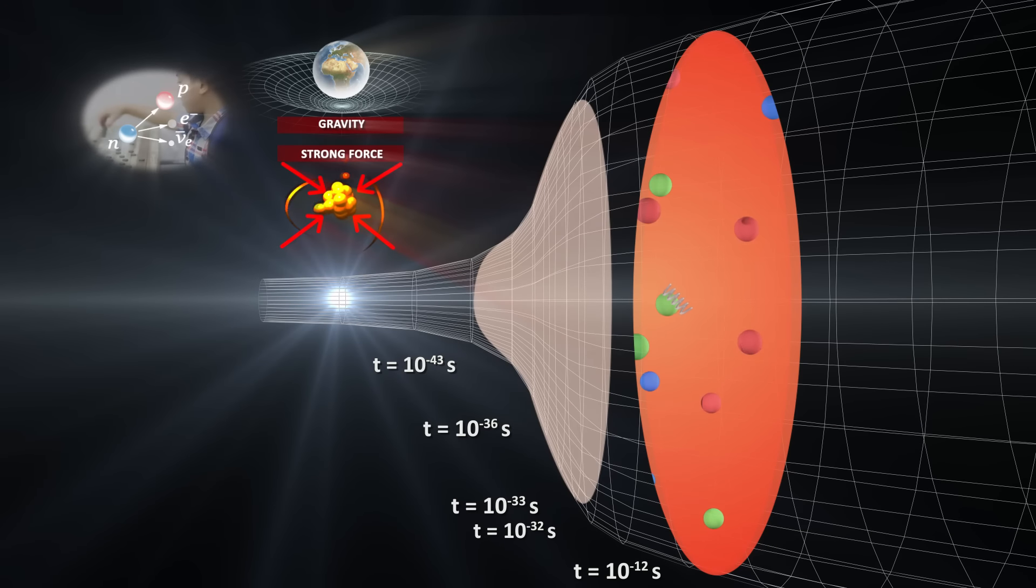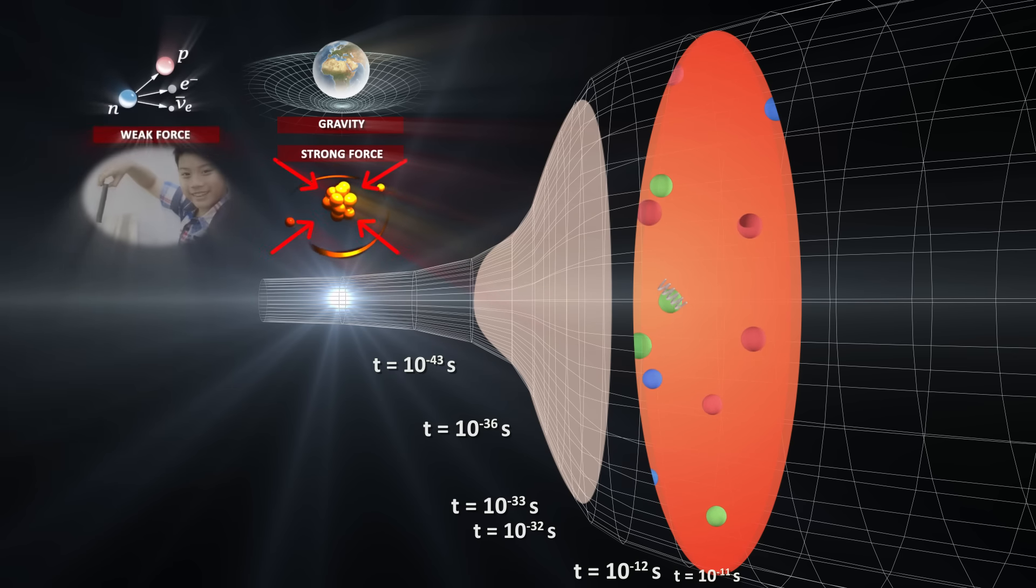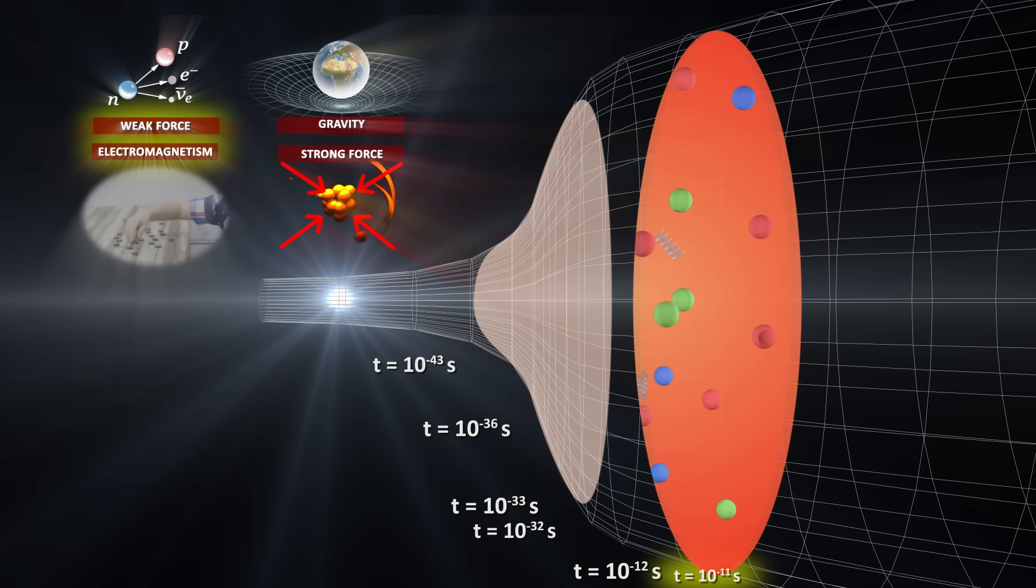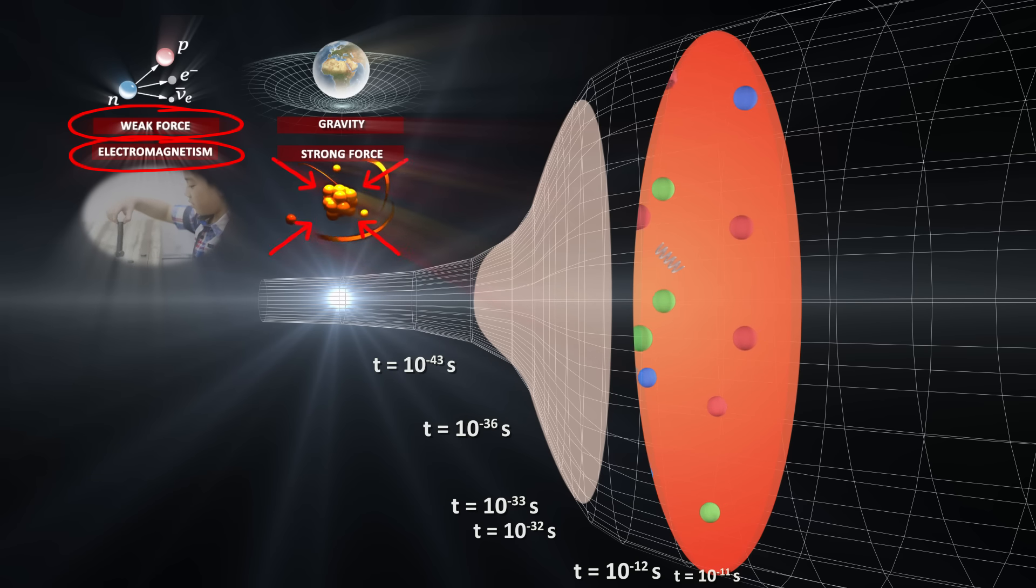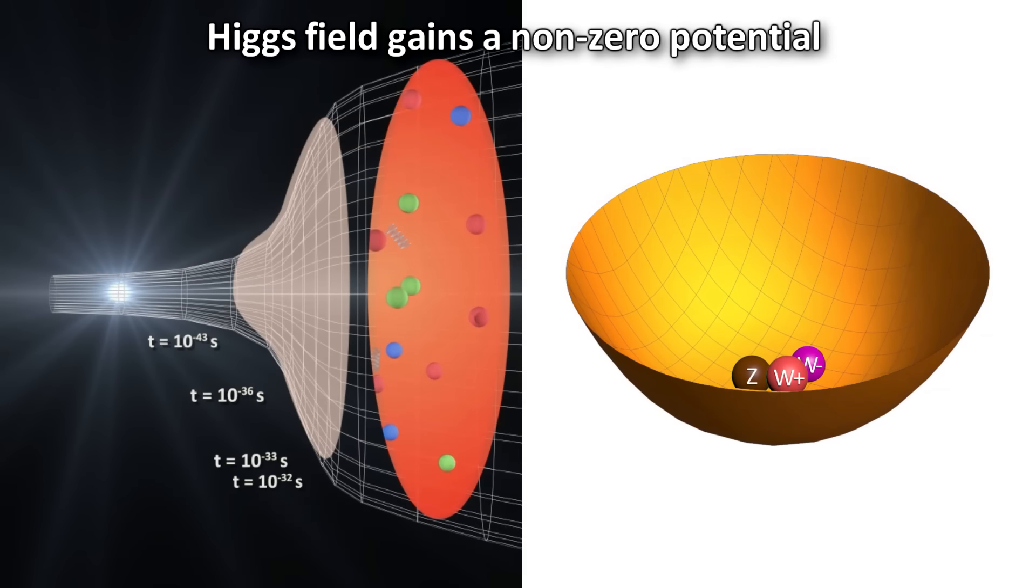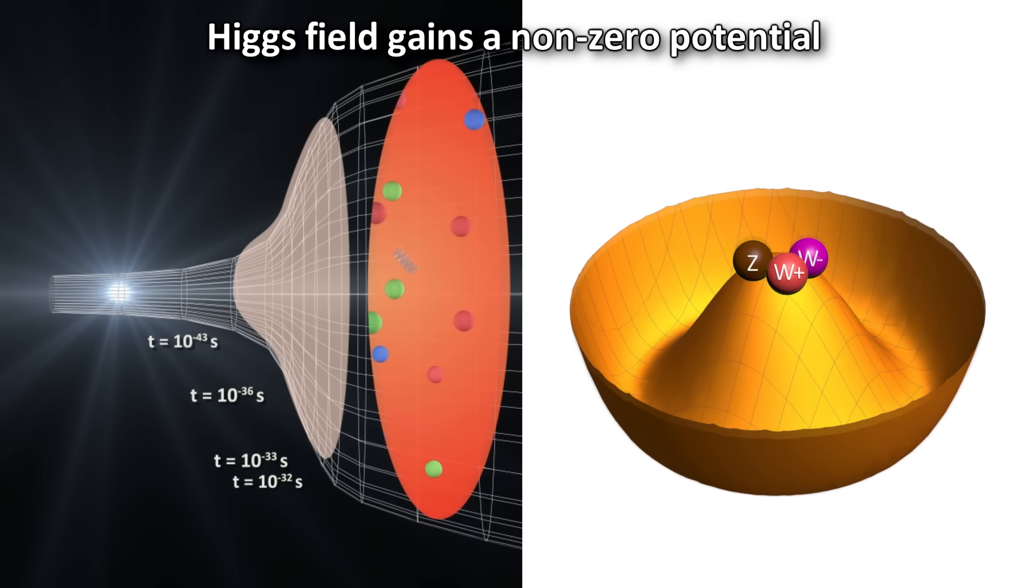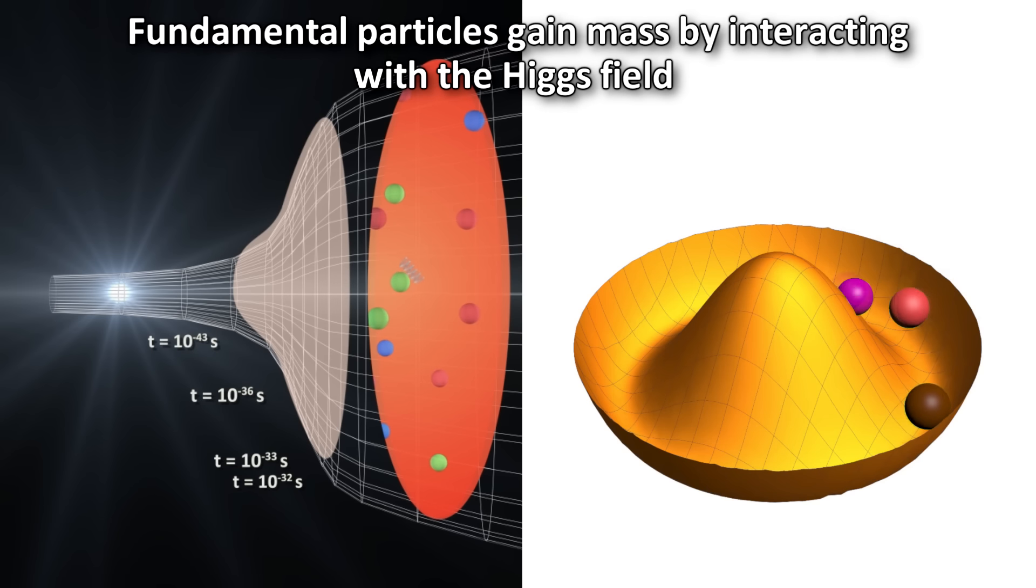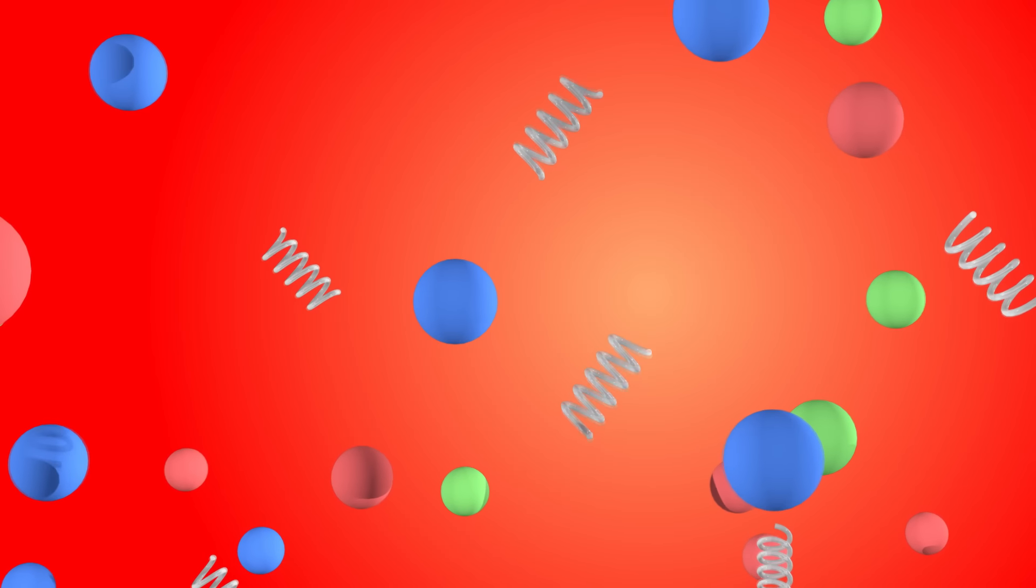As time ticks slightly forward to about 10 to the negative 11 seconds, and the temperature of this hot universe falls a bit further to about 10 to the 15 or 1 quadrillion kelvin, the lower temperature and energies leads to something called electroweak symmetry breaking, at the beginning of the quark epoch. What happens at this stage is that the electromagnetic and weak forces become distinct and separate forces. This leads to the Higgs field gaining a non-zero potential, which looks like a Mexican hat called a sombrero. This means that the fundamental particles that now interact with the Higgs field gain mass. This is how the particles of the standard model obtain their rest mass. If you want to learn more about the electroweak symmetry breaking and how the Higgs potential causes the particles to become massive, check out my video about electroweak theory.